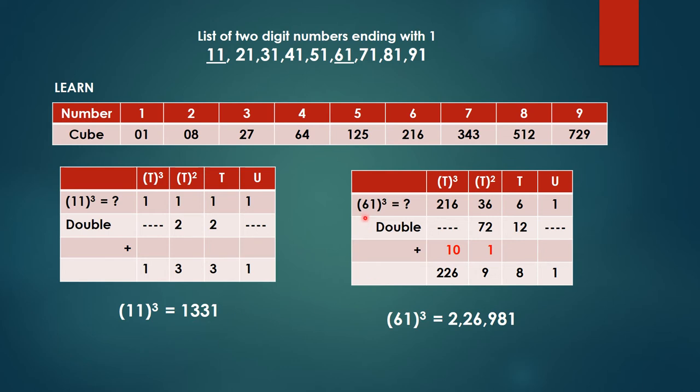Let us take the example of 61 cube. Units place we have 1, tens place we have 6. So this is our original number 61 whose cube we are going to find out right now. Now the number in the tens place squared, that is 6 times 6 or 36, and 6 raised to 3, cube of 6 is 216. So 216.